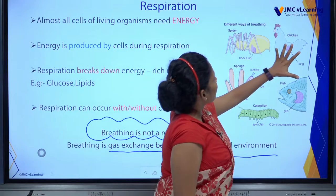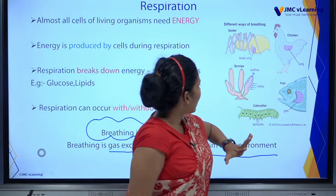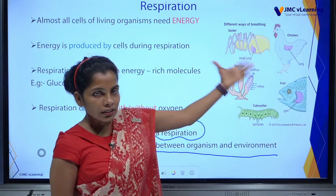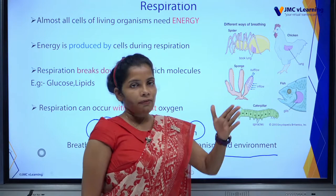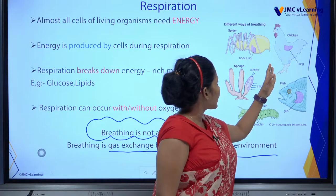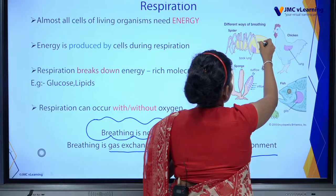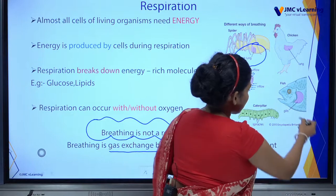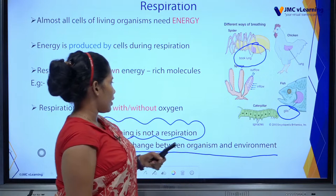There are different ways of breathing. You can see a chicken, sponge, fish, and caterpillar — those animals show different ways of breathing. Many vertebrates use lungs. Invertebrates like spiders use the book lung. Sponges and caterpillars differ, and all fish use gills.